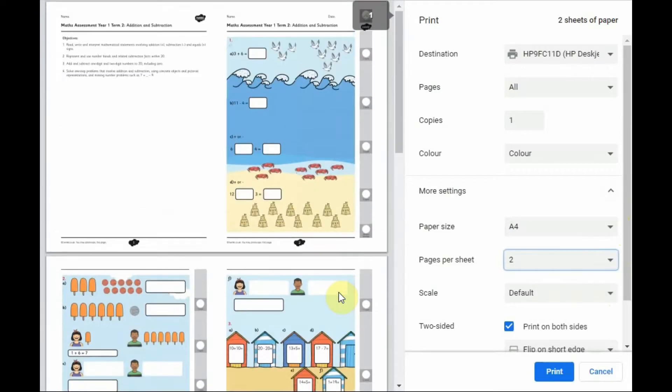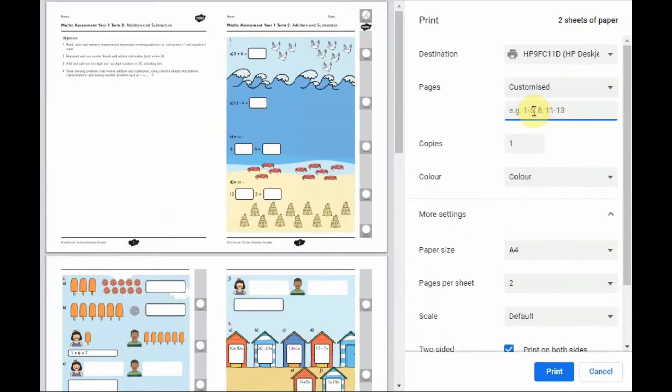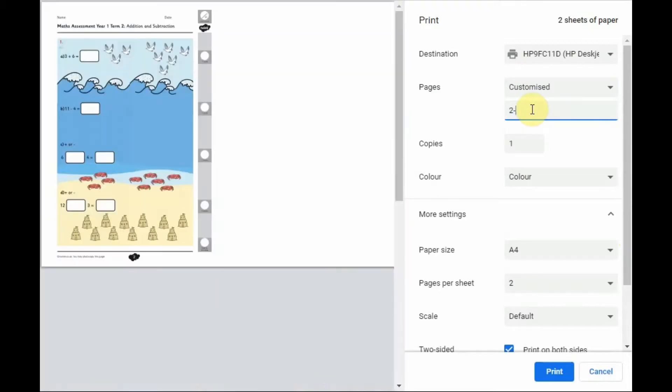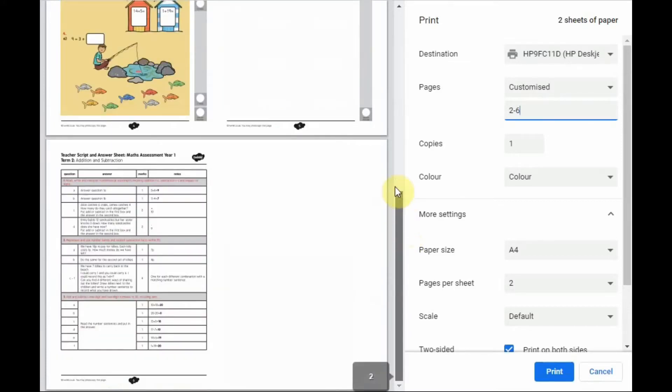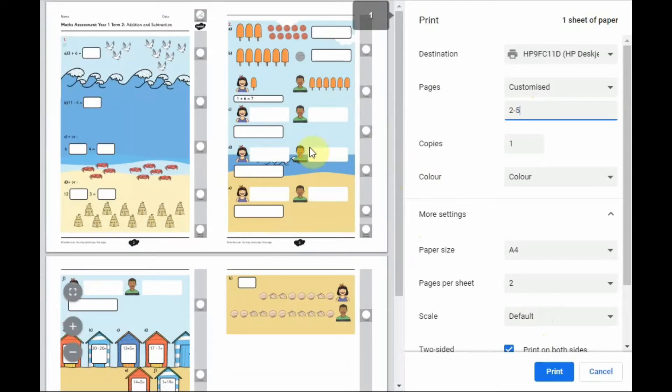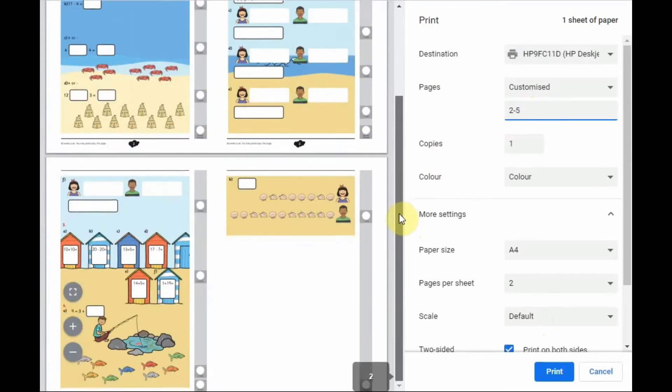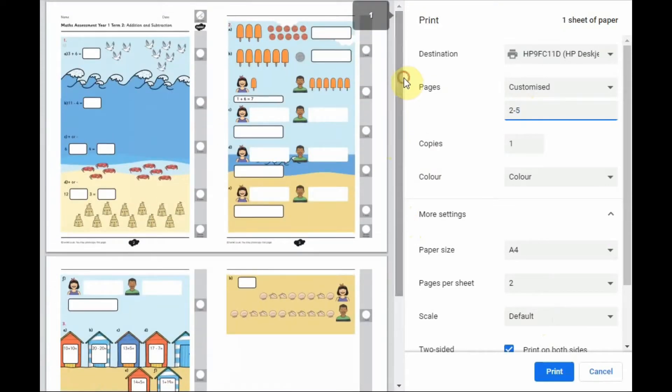A top tip for printing this resource to save ink and paper is to change the amount of pages to one sheet and printing back to back if your printer allows to create a mini foldable book. This resource also comes in different maths topics for year 1 and year 2. Also remember to not print the first or the last page as this includes the marking scheme.